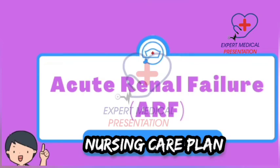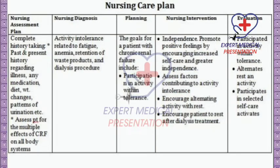Nursing care plan for acute renal failure. Nursing assessment includes complete history taking — past and present history regarding illness, any medication, diet, weight changes, patterns of urination, etc. Assess for the multiple effects of chronic renal failure on all body systems.